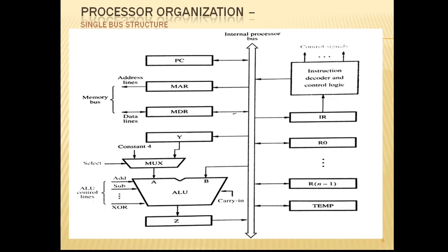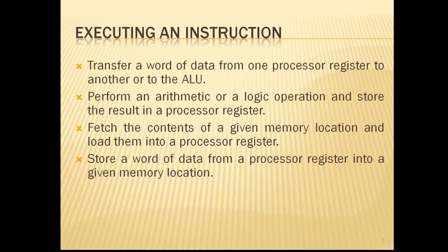With few exceptions, an instruction can be executed by performing one or more of the following operations in a specified sequence: first, transfer a word of data from one processor register to another or to the ALU; second, perform an arithmetic or logic operation and store the result in a processor register; third, fetch the contents of a given memory location and load them into a processor register; fourth, store a word of data from a processor register into a given memory location. In the upcoming videos, we shall see in detail how each of these operations is implemented using the simple processor model shown in the figure. Keep watching. Thank you.